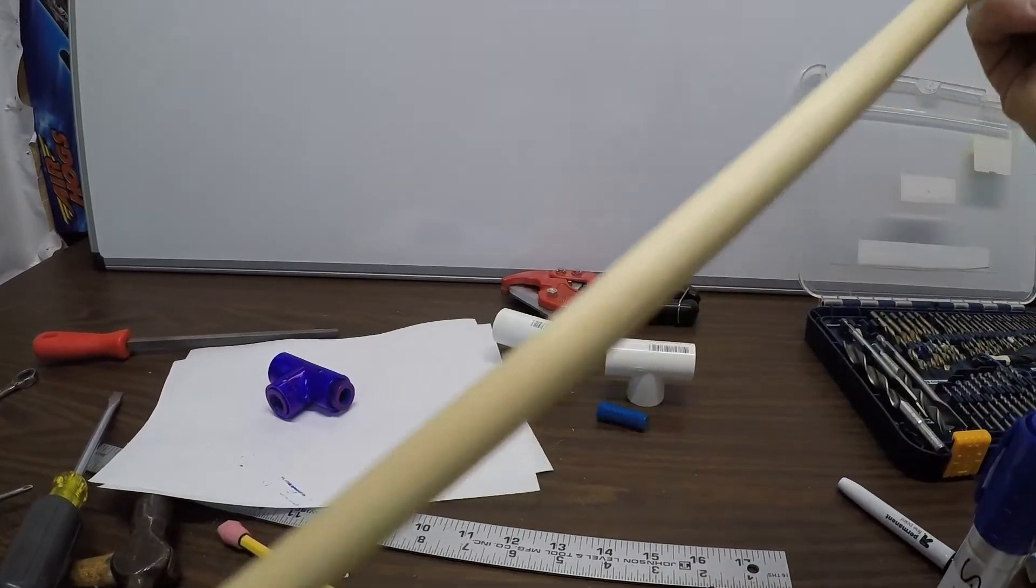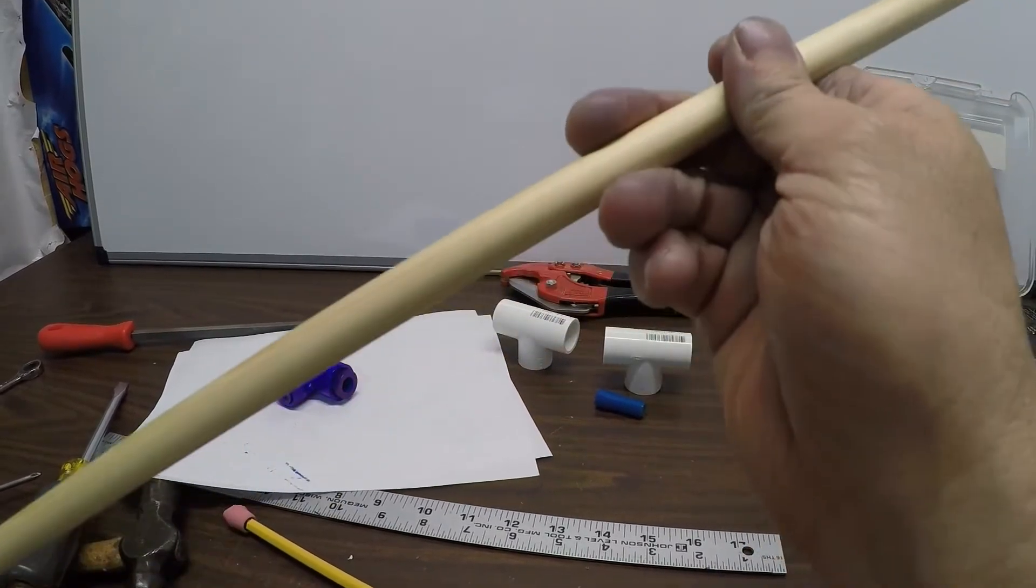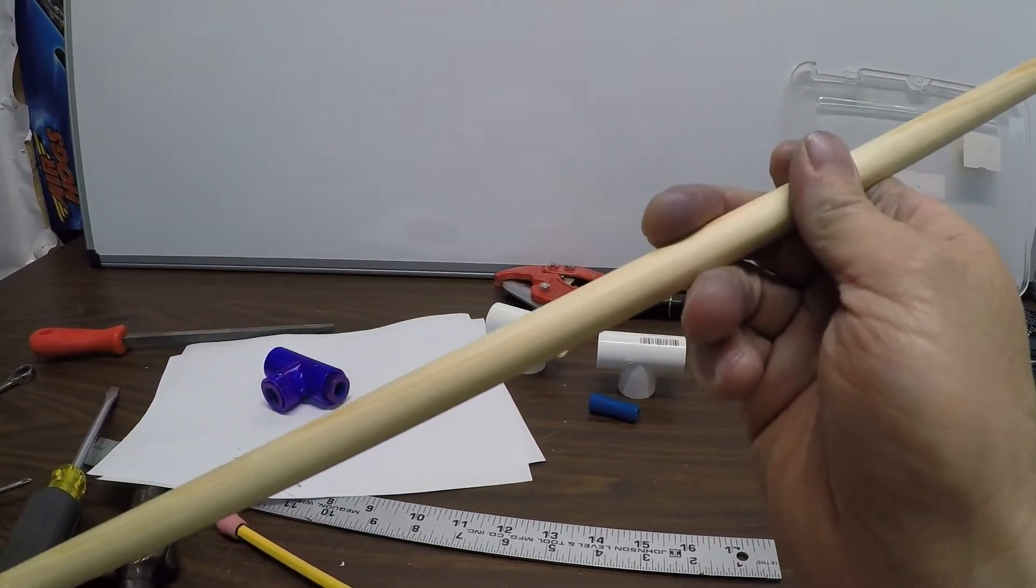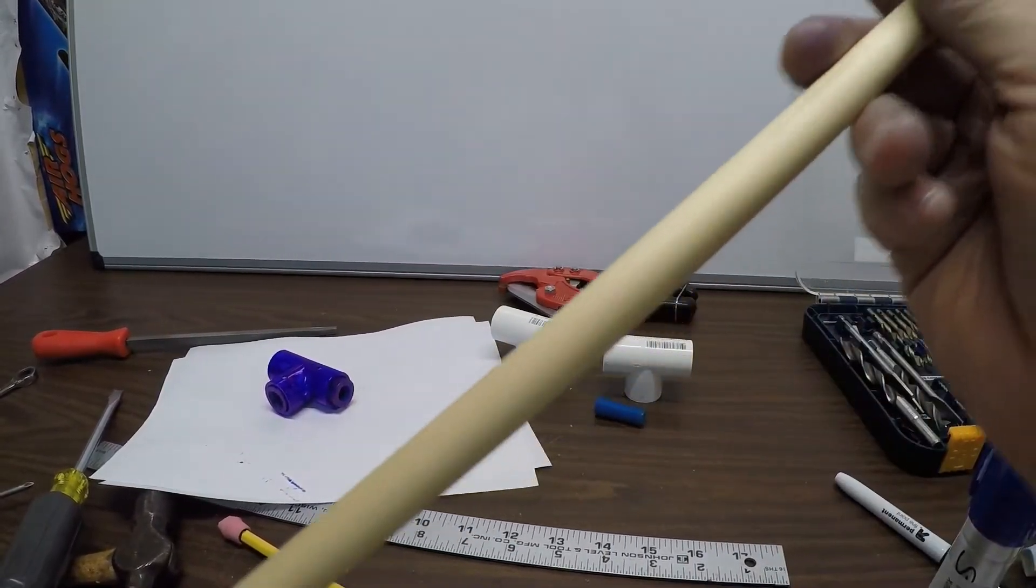When you're going to the store to get a dowel, do yourself a favor and make sure you can get the straightest possible one you can get. And the technique I use is I just lay a bunch of dowels on the floor of the store. Usually it's concrete.